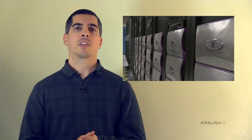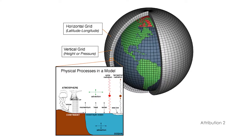Global climate models use the laws of physics to simulate our planet's climates. They're so sophisticated they have to be run on some of the world's fastest supercomputers. It can take months to run a single simulation. So how do climate models work?